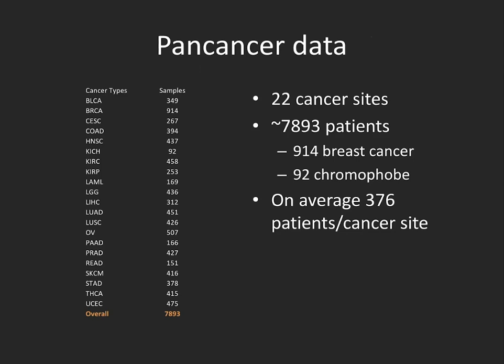These are the different cancer sites we considered for this study, where we developed a data fusion model integrating clinical, molecular, and image data to predict overall survival. We used 22 cancer sites totaling about 8,000 patients, where breast cancer contributed the most patients and chromophobe renal cell carcinoma had the fewest. On average, we had about 376 patients per cancer site.